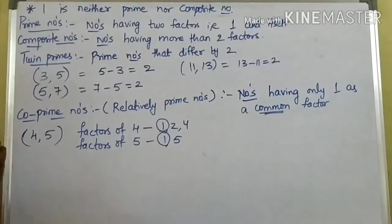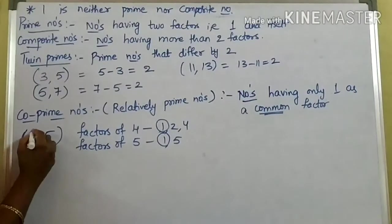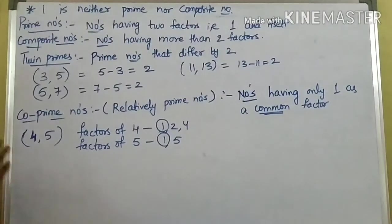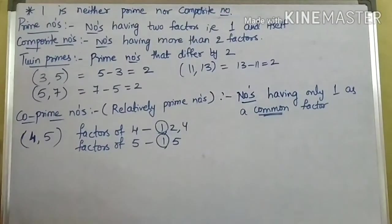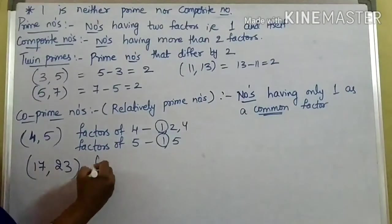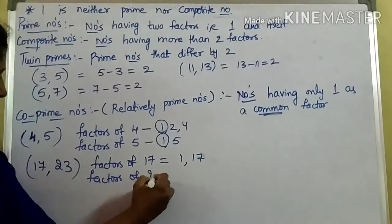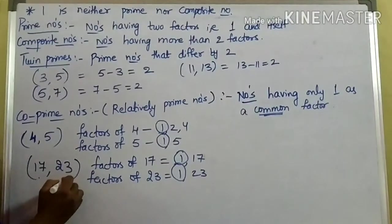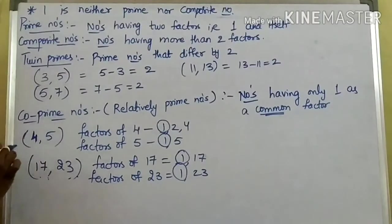Two prime numbers are co-primes, and all co-primes need not be prime — it is not compulsory to have prime numbers only; co-primes can contain composite numbers also. But all prime numbers are co-prime numbers. For example, seventeen and twenty-three are prime numbers having only two factors — one and itself. Factors of seventeen are one and seventeen, factors of twenty-three are one and twenty-three. The only common factor is one. So seventeen and twenty-three are co-prime numbers and also prime numbers. All prime numbers are co-prime numbers but all co-primes need not be prime numbers.